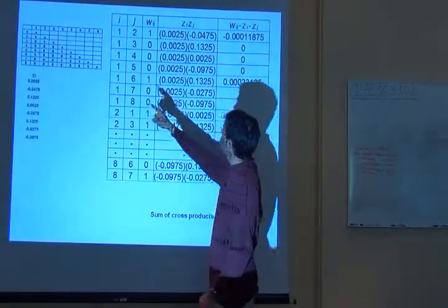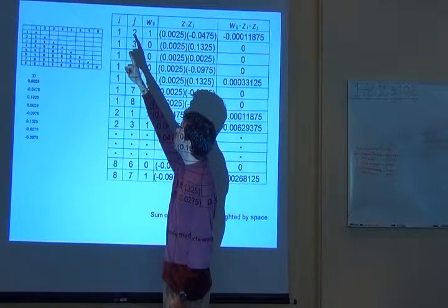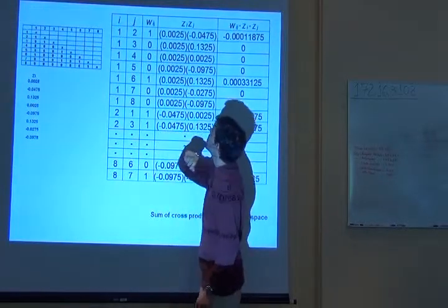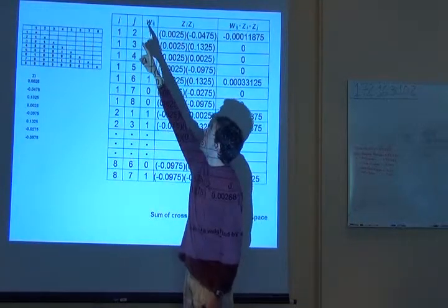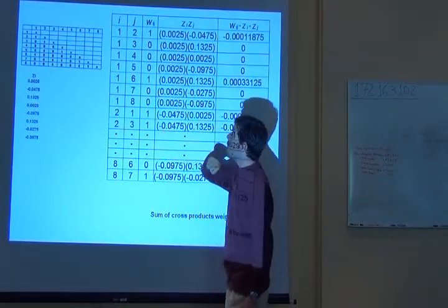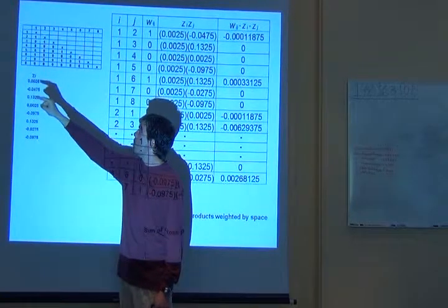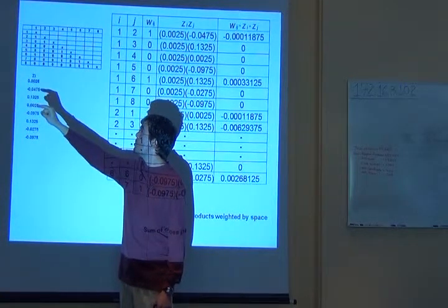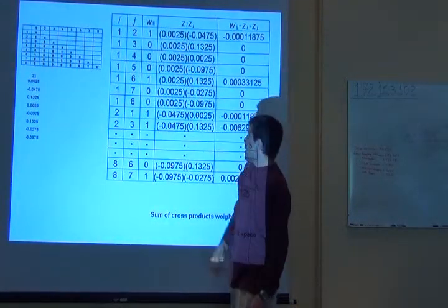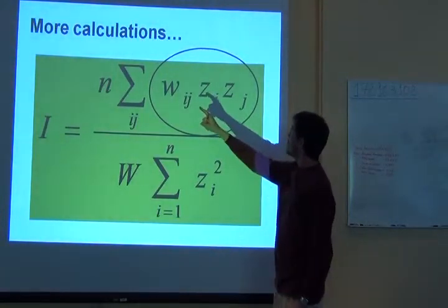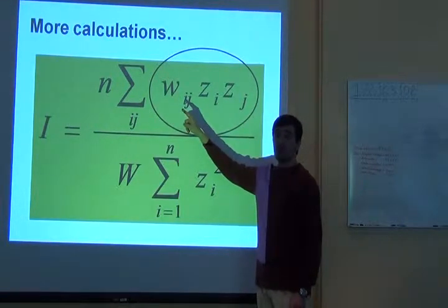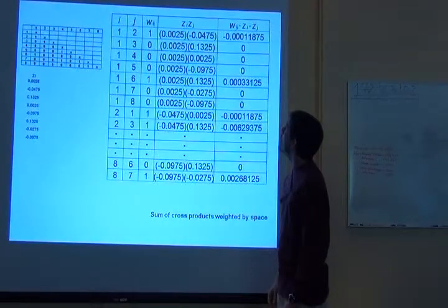So is point one connected to point two? Look here. Is it? Then wij must be one. And now I'm going to get this z value here, which is z1, and this is z2. I'm going to multiply them. And according to this formula here, I must multiply z1, z2, and wij, which is w12.